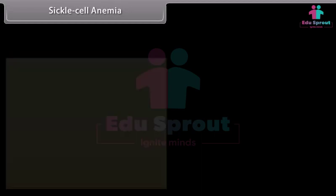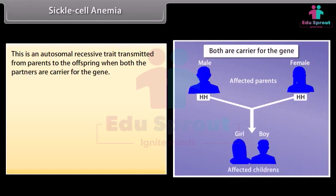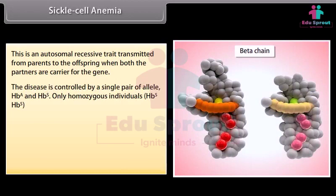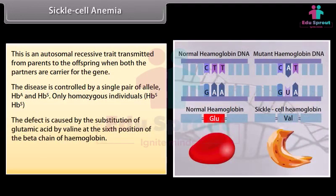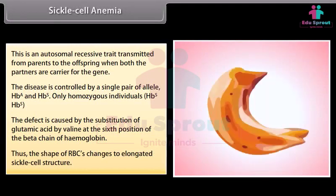Sickle cell anemia is an autosomal recessive trait transmitted from parents to offspring when both partners are carriers for the gene. The disease is controlled by a single pair of alleles, HbA and HbS. Only homozygous individuals (HbS/HbS) are affected. The defect is caused by the substitution of glutamic acid by valine at the sixth position of the beta chain of hemoglobin, causing RBCs to change to an elongated sickle cell structure.